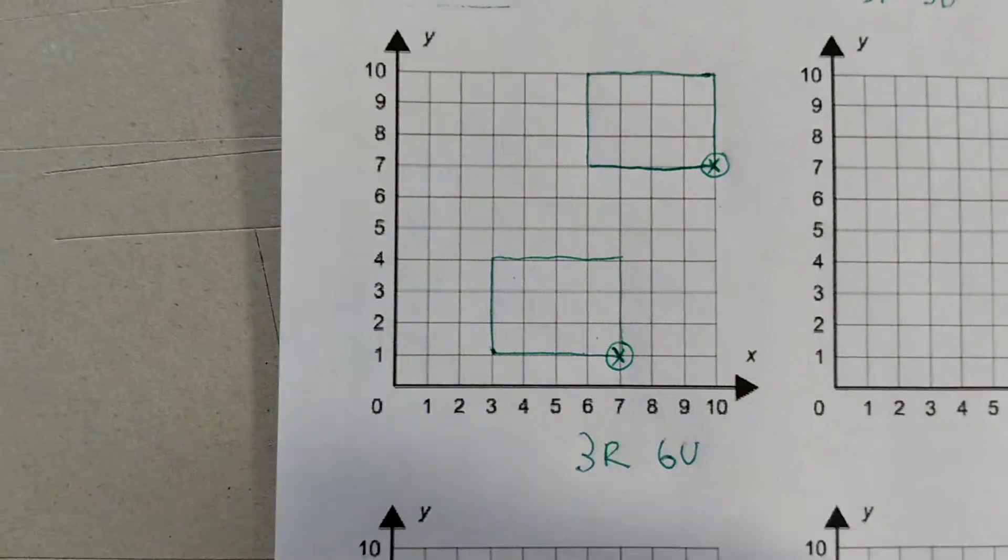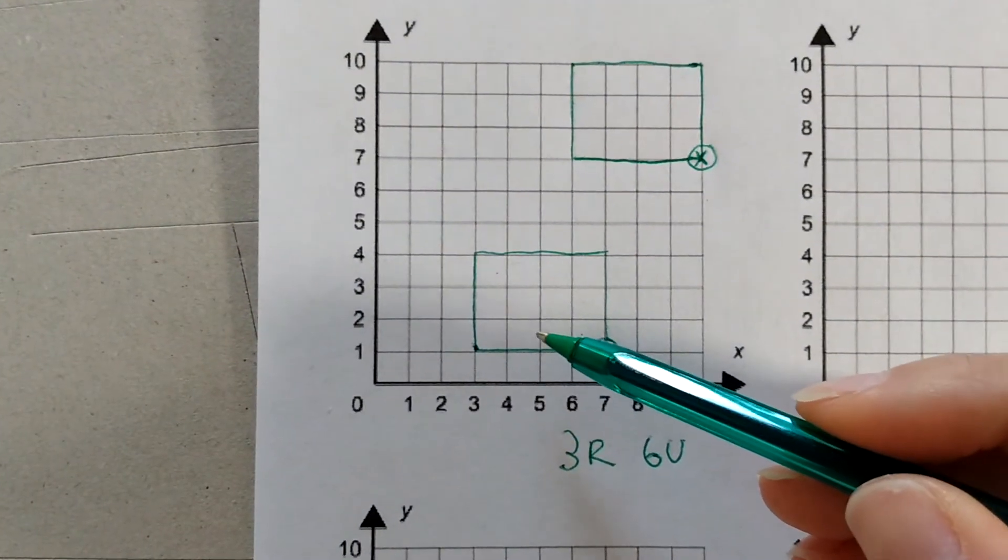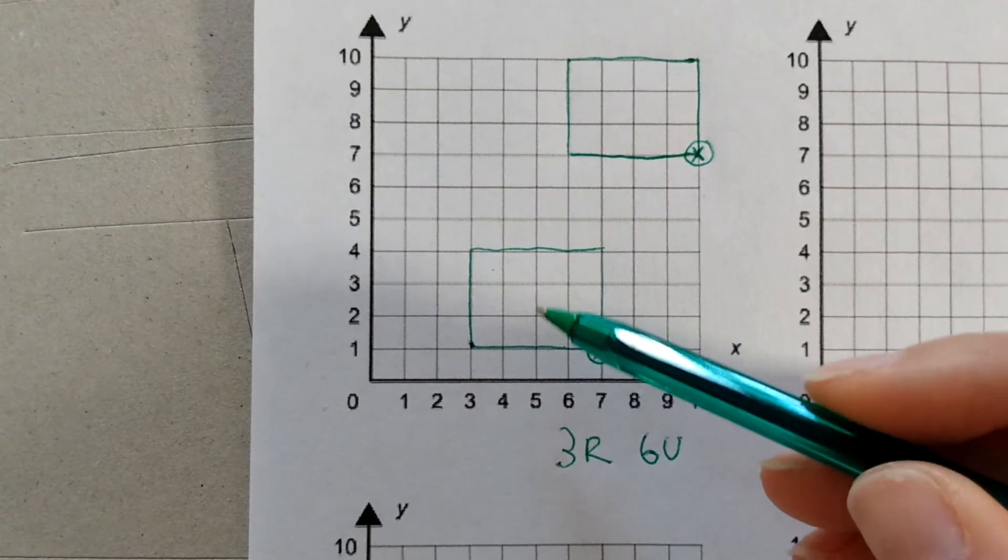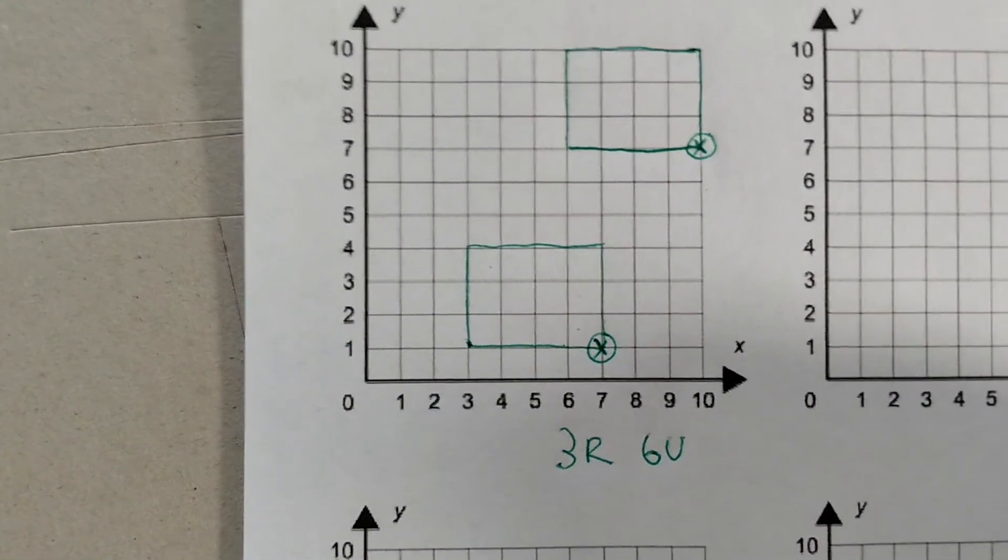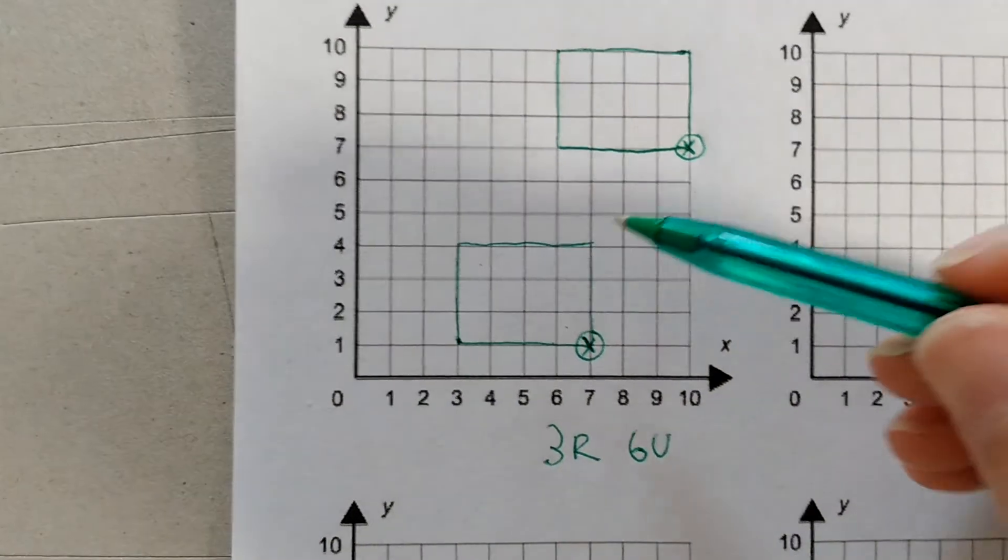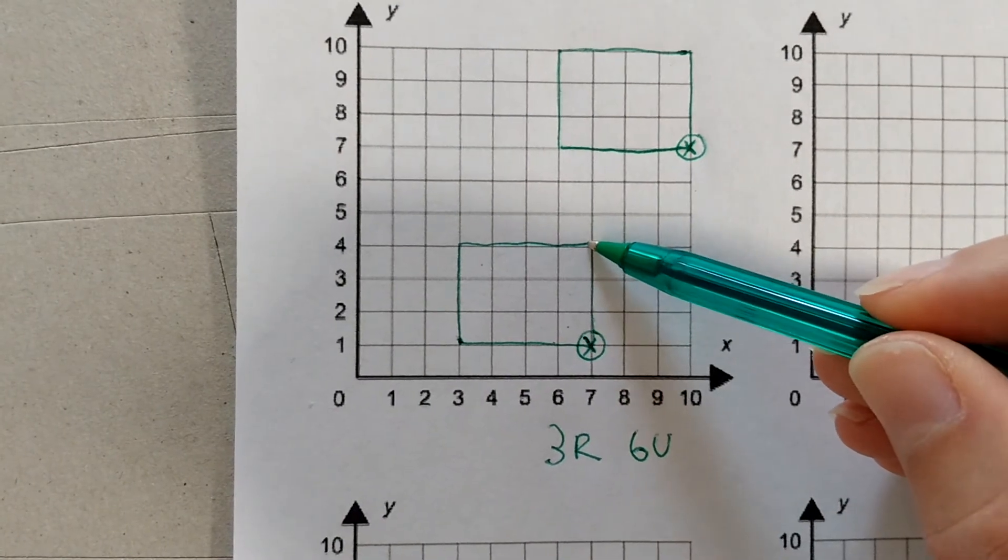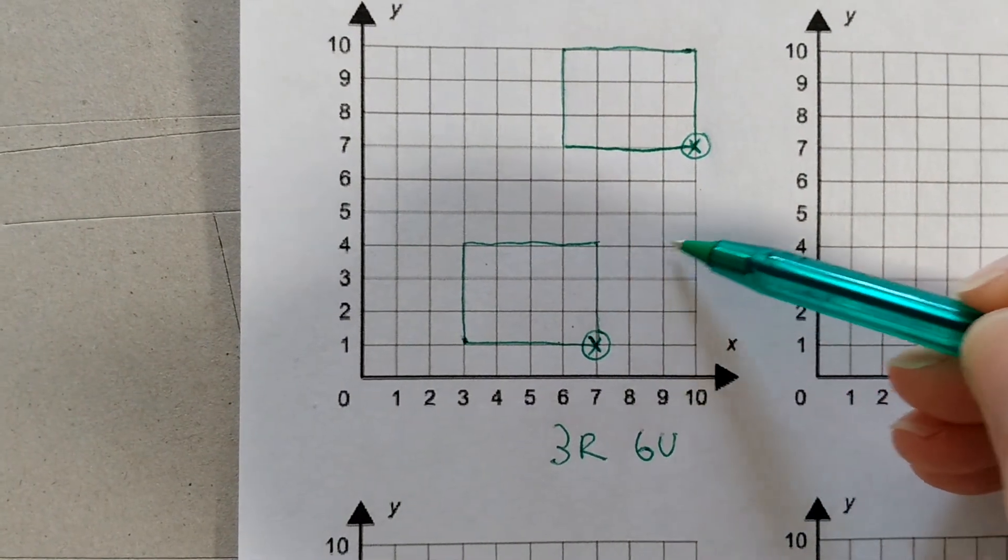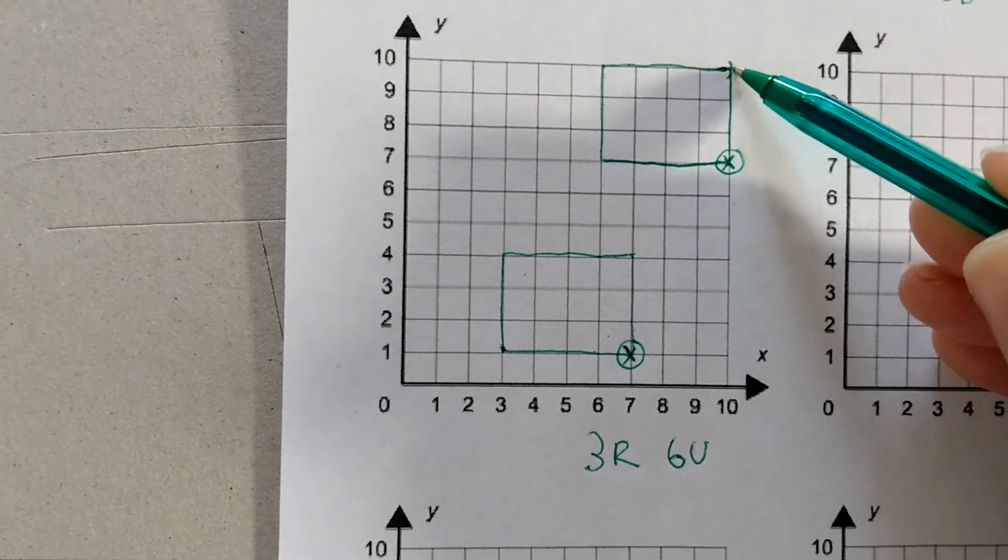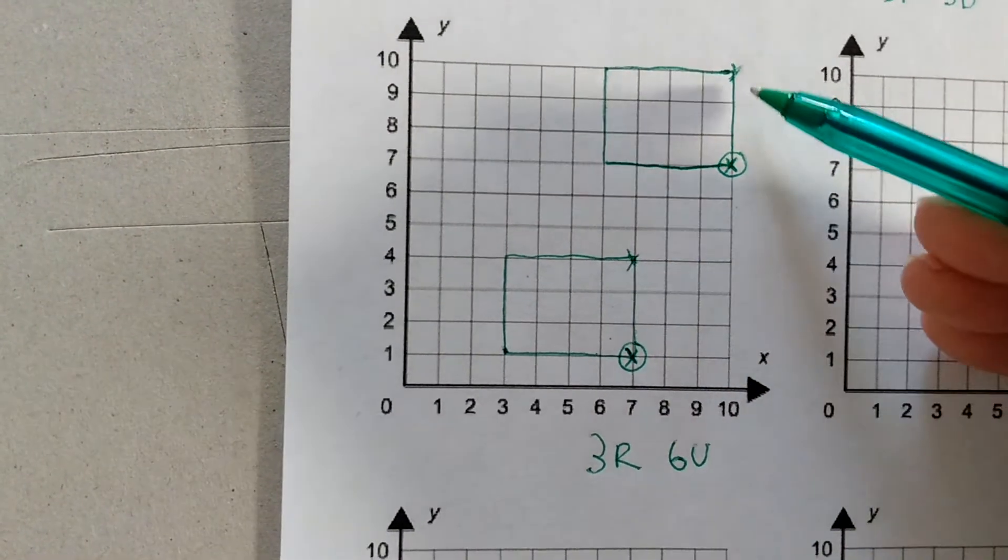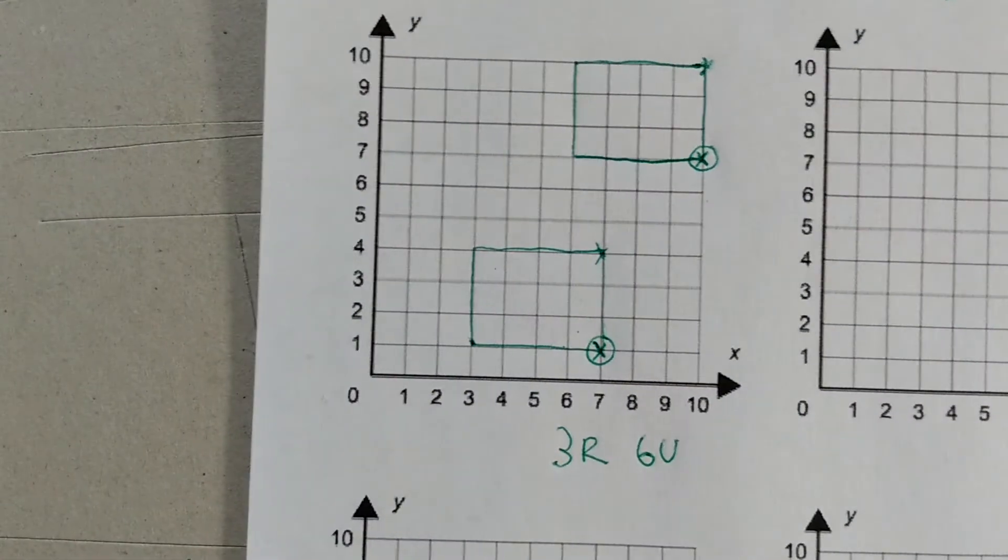So the whole rectangle shape translated from here to here needs to go three right and six up. We can check the other corner points, three right, one, two, three, six up, one, two, three, four, five, six. Good. That one ends up where we want it to.